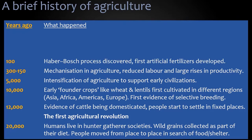A hundred years ago, we discovered the Haber-Bosch process, which allowed us to develop artificial fertilizers. Until that point, all the fertilization to increase the nutritious value of the soil was done through manure from animals. But there's insufficient manure to do this, so artificial fertilizer development was a huge boost in our ability to produce more food.